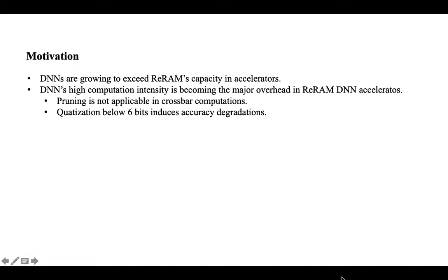In recent years, DNNs keep growing fast, exceeding the on-chip storage capacity of DNN accelerators. Accordingly, the computation overhead also increases significantly. This problem is especially severe for accelerators that use in-memory computing. For example, RERAM-based accelerators perform the matrix-vector multiplication in crossbar structures. Conventional pruning technologies are not directly applicable due to their randomly distributed zero weights.